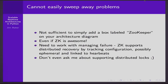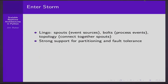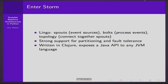Storm has some terminology. There's the idea of an event source, which we call spouts. We have event processing nodes called bolts, and a topology to link them together in a directed acyclic graph. There is strong support for partitioning and fault tolerance. Storm is written in Clojure but exposes a Java API — hence my use of Jython here, although you could use some IPC mechanism to talk with CPython. It uses ZooKeeper to manage things.